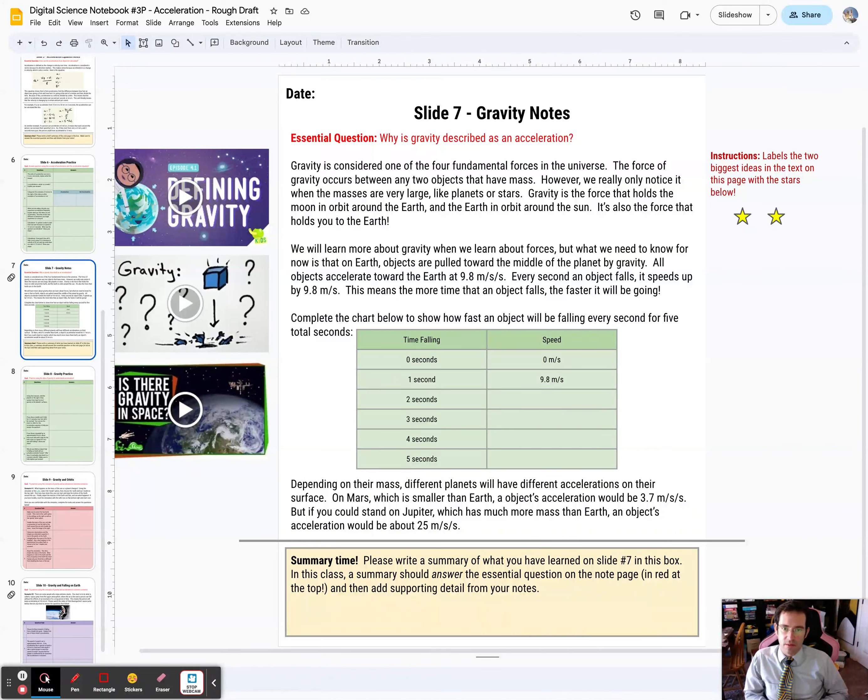We've learned about acceleration. Gravity is going to be a specific example of acceleration. The way we experience gravity on Earth is at a constant acceleration of 9.8 meters per second per second down towards the center of the Earth or towards the ground.